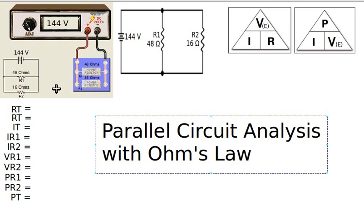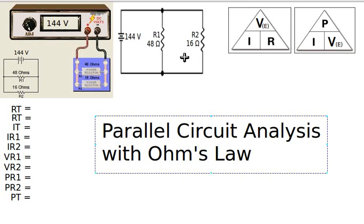A parallel circuit has more than one branch. If we consider conventional current, which flows from positive to negative, it has two different branches. One branch flows through R1 and back to the negative terminal; the other goes from the positive terminal through R2 and back to the negative terminal. Because branch 2 has less resistance, it has more current flowing through it than branch 1.